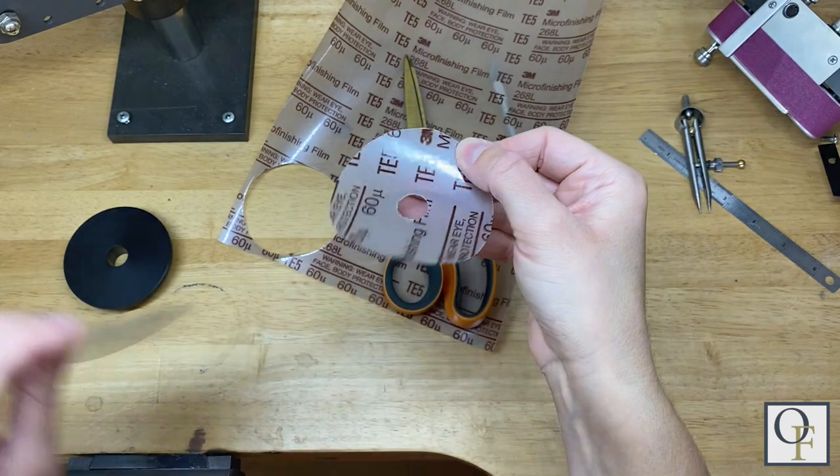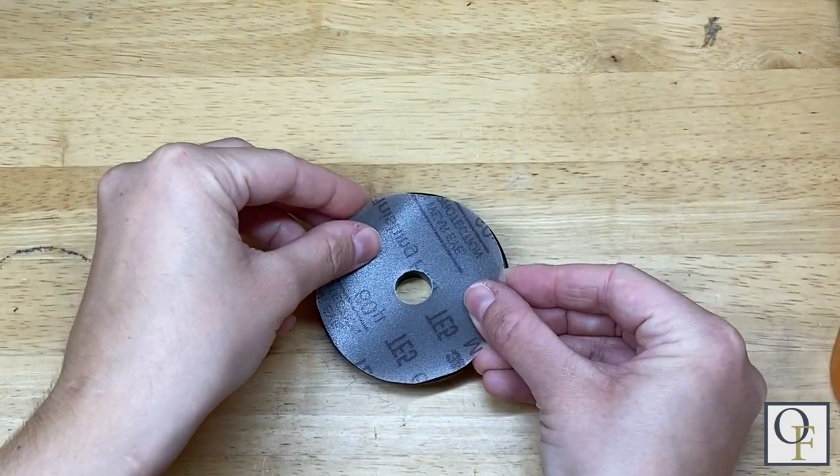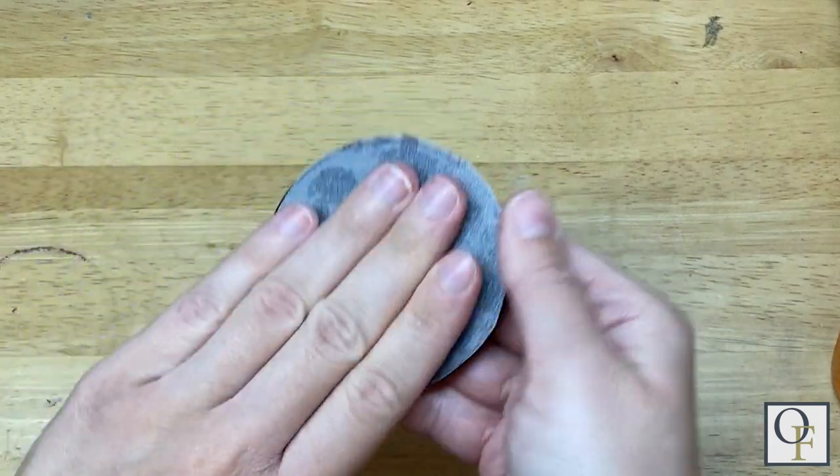Once you have it all cut out you can peel the clear film from the back of the sheet and adhere it to the plastic disc. Use firm pressure all around the disc to make sure every part is adhered.